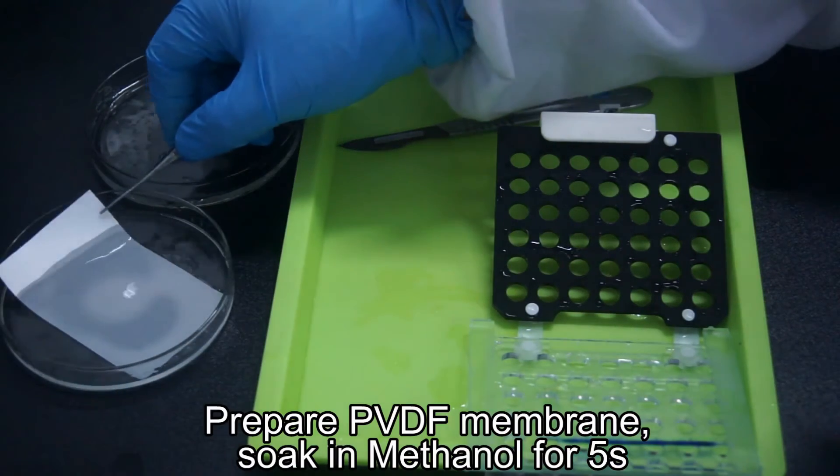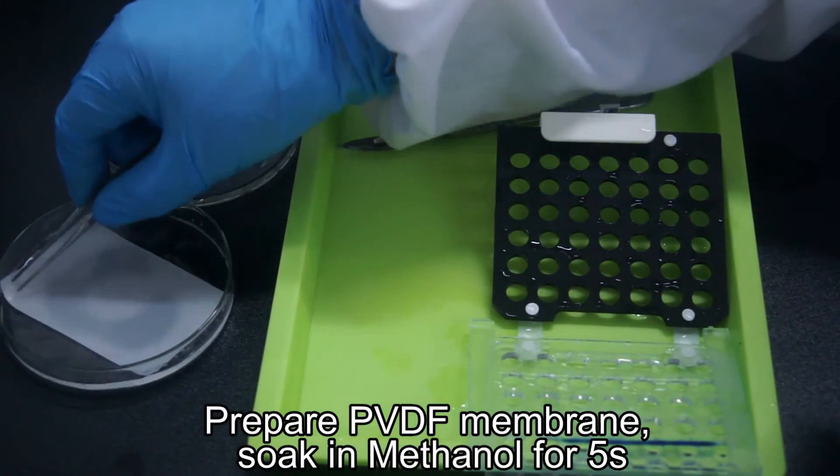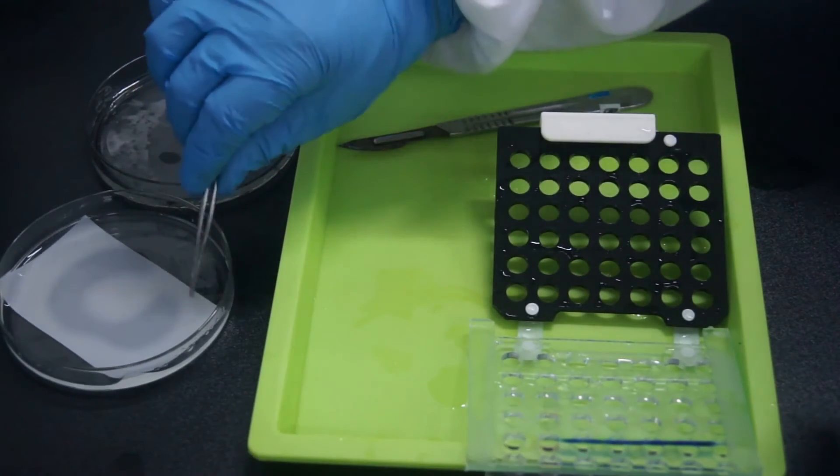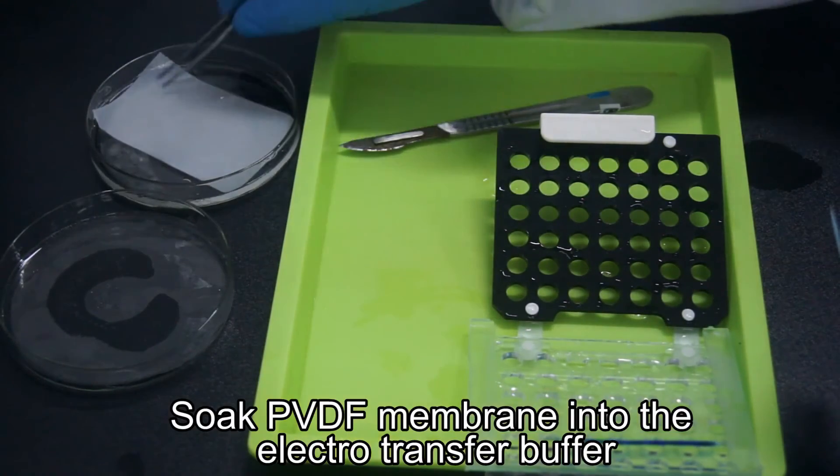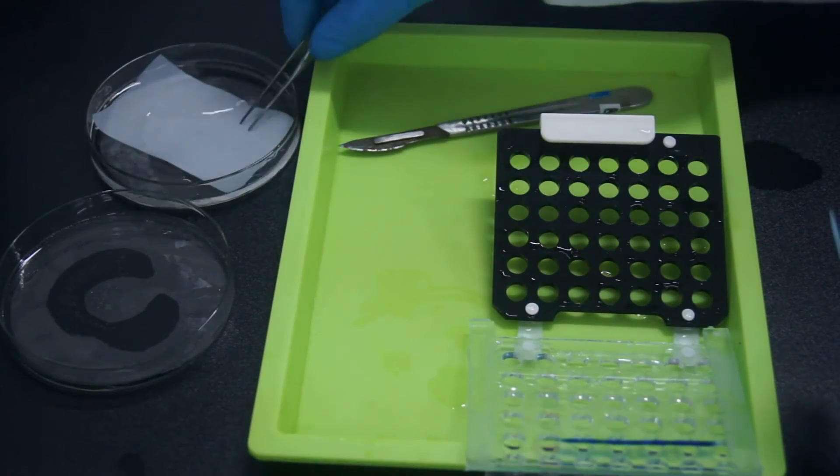Soak the PVDF membrane in methanol for 5 seconds to reactivate it. Soak the PVDF membrane, filter paper, and fiber mats into the electrotransfer buffer.